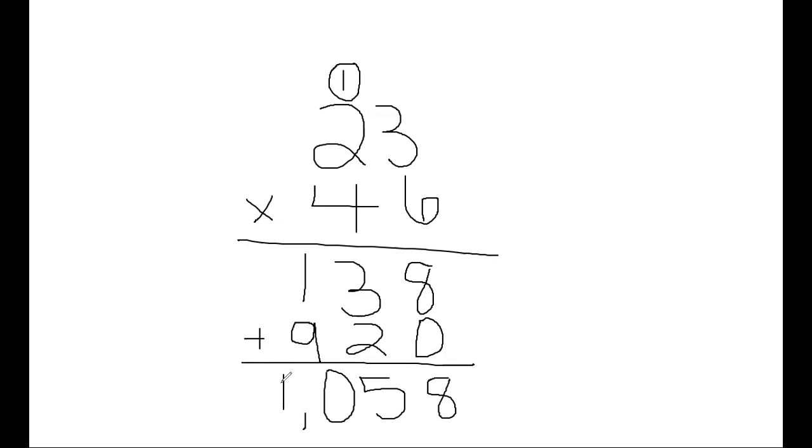And then I'm going to show you also how we could multiply this using the area model. So we're still going to be doing 23 times 46, but I am going to create a box. There's probably an easier way to do this for 23 times 46. So I'm going to write that out here so I don't forget my problem.